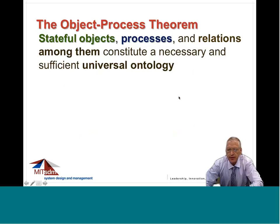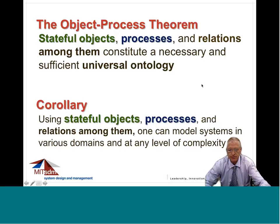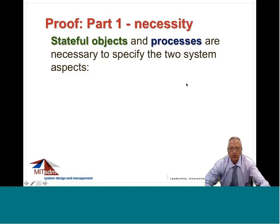I'm now going to introduce something new which I call the Object-Process Theorem. This theorem states: stateful objects, processes, and relations among them constitute a necessary and sufficient universal ontology. A corollary is that using stateful objects, processes, and relations among them, it is possible to model systems in various domains and at any level of complexity. It's a pretty ambitious statement, and I want to try to prove it.